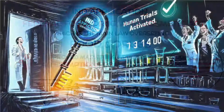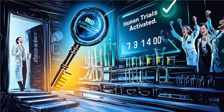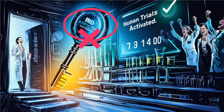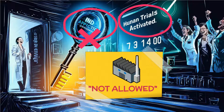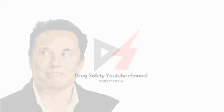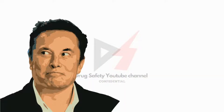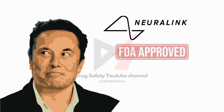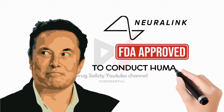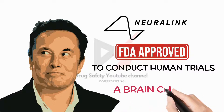An IND application is like the key that unlocks the door to starting human trials for any new medicine. Without an IND application, the sponsor isn't allowed to conduct clinical trials involving human subjects in the United States. For example, just recently, Elon Musk's Neuralink company received FDA approval to conduct human trials for a brain chip developed by his research team.